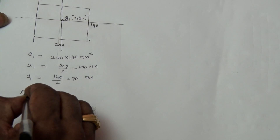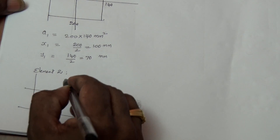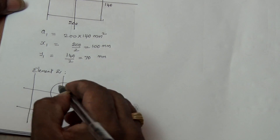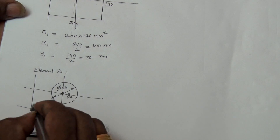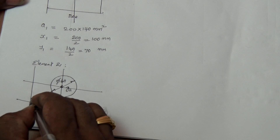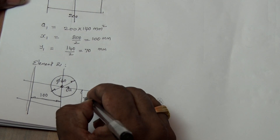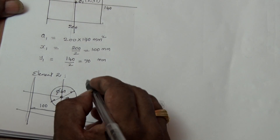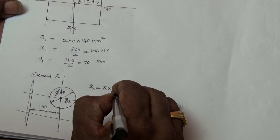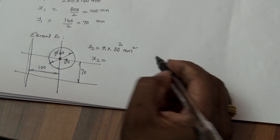Element 2 is a circle placed centrally on the rectangular plate with diameter 60. G2 is located at a distance of 100 from the Y-axis and 70 from the X-axis. Therefore, A2 is equal to π multiplied by r², that is π × 30² mm². X2 is equal to 100.